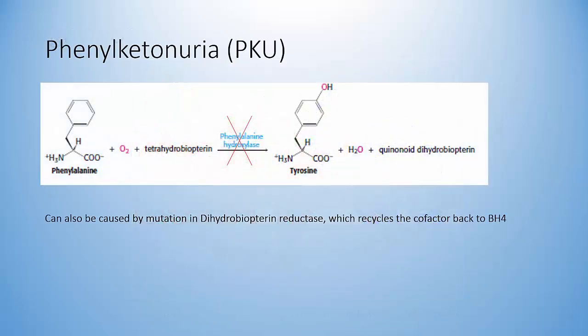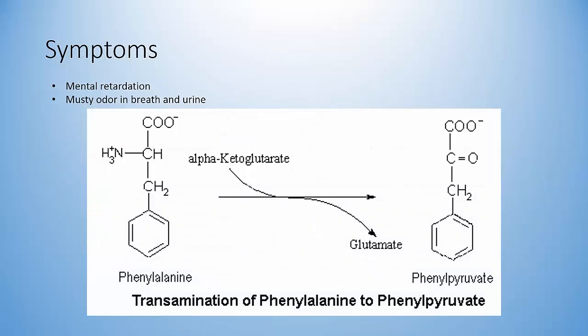This enzyme is clinically relevant, as a mutation in it causes phenylketonuria, or PKU, a rare genetic disorder with about 20,000 new cases diagnosed per year. The mutation causes phenylalanine hydroxylase to be nonfunctional, so phenylalanine cannot be converted to tyrosine and builds up in the body. PKU can also be caused by a mutation in dihydrobiopterin reductase, which recycles the cofactor back to BH4. Symptoms of untreated PKU include mental retardation caused by phenylalanine blocking neurodevelopment, and a musty odor in the breath and urine caused by increased levels of phenylpyruvate, a product of a transaminase reaction involving glutamate. This musty odor and subsequent urinalysis revealing high phenylpyruvate levels led to the disease's discovery and its name, phenylketonuria.